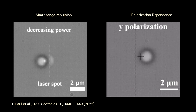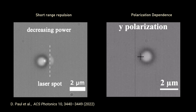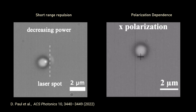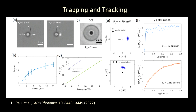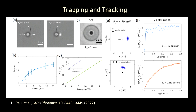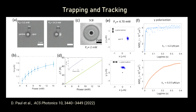By adjusting the power as a parameter you can place the particle at a location with reasonable precision. You can also play with polarization to reorient the particle. The mean square displacement shows a confined regime, from which you can calculate trap stiffness. We also use liquid crystals to understand the temperature profile.